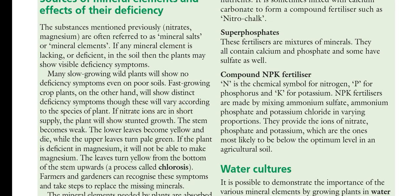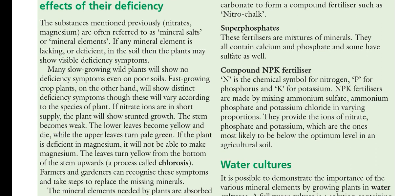If nitrates are in short supply, the plant will show stunted growth. The stem becomes weak, lower leaves become yellow and die, while the upper leaves turn pale green.